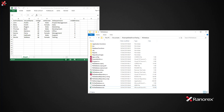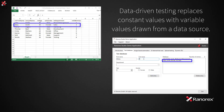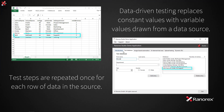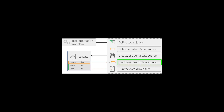Included within the download is the source data in both .csv and .excel formats. Data-Driven Testing replaces constant values with variable values drawn from a data source. Test steps are repeated once for each row of data in the source. Data-Driven Testing has three main components: variables, which need to be defined; data sources; and data bindings, which connect the variables to the data sources.